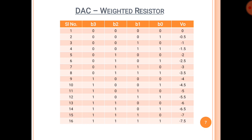For example, if all B0, B1, B2, B3 are 1 — that is serial number 16 in the table — we will get a value of −7.5V, because we add −0.5, −1, −2, and −4. Therefore, we get −7.5V when all bits B0, B1, B2, B3 are 1.